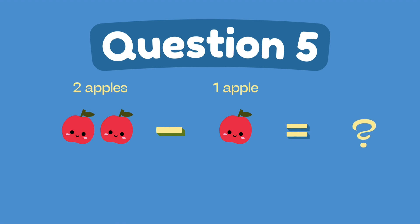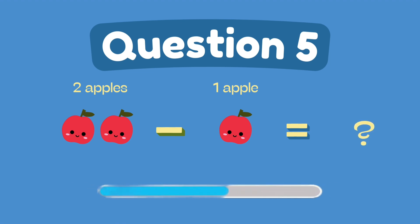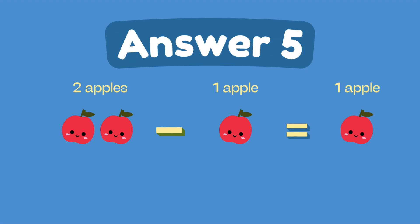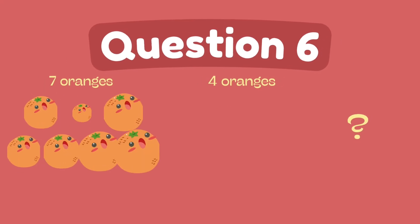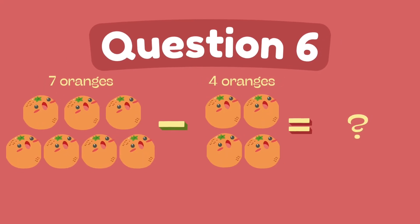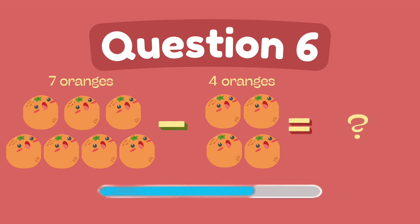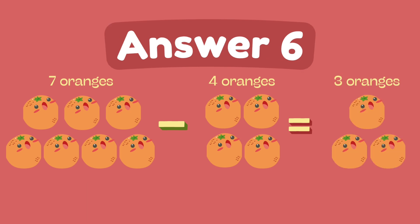What is two minus one? The answer is one. What is seven minus four? The answer is three.